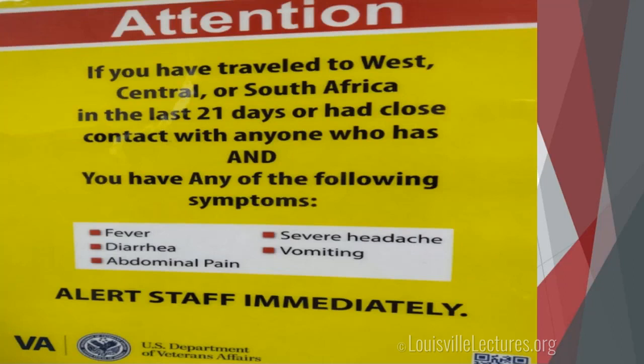At some hospitals — for example, the VA — we have signs posted. People who are presenting with acute febrile illness are asked: have you traveled to West, Central, or South Africa in the last 21 days and had close contact with anyone who has the following symptoms? If so, they alert a staff member immediately, are given a mask, and are put in isolation for further evaluation. This happens both in the emergency department and the outlying clinics as well.